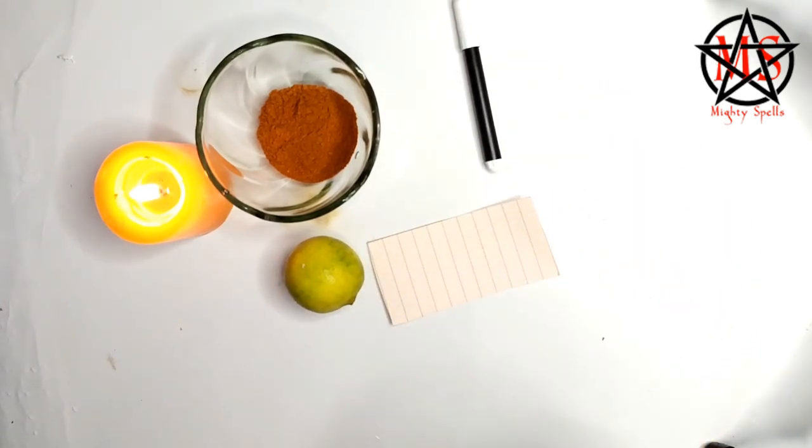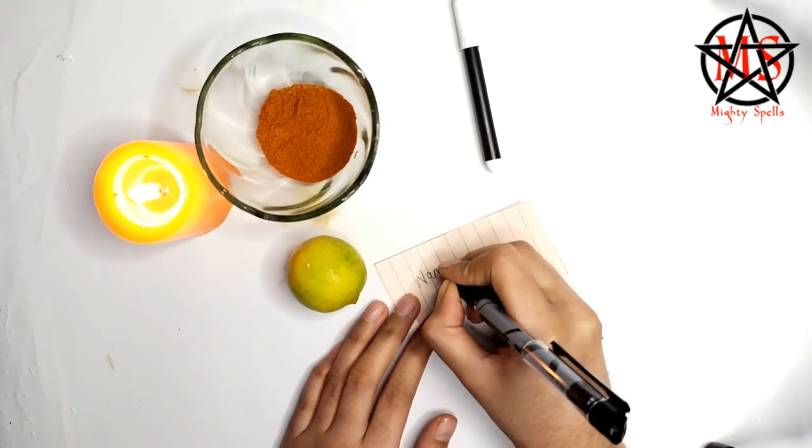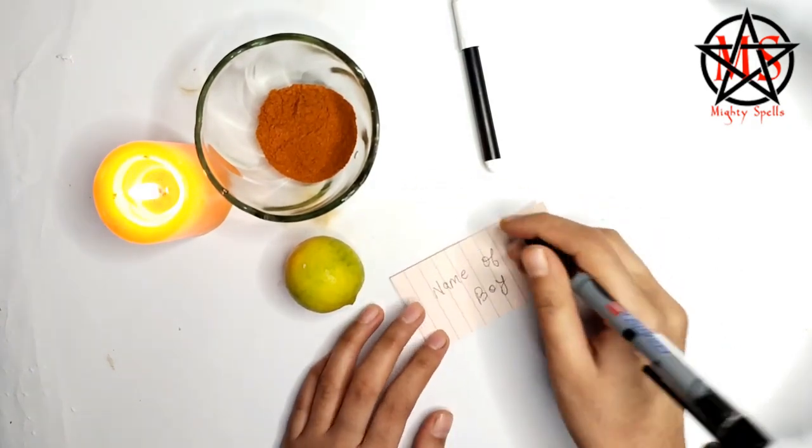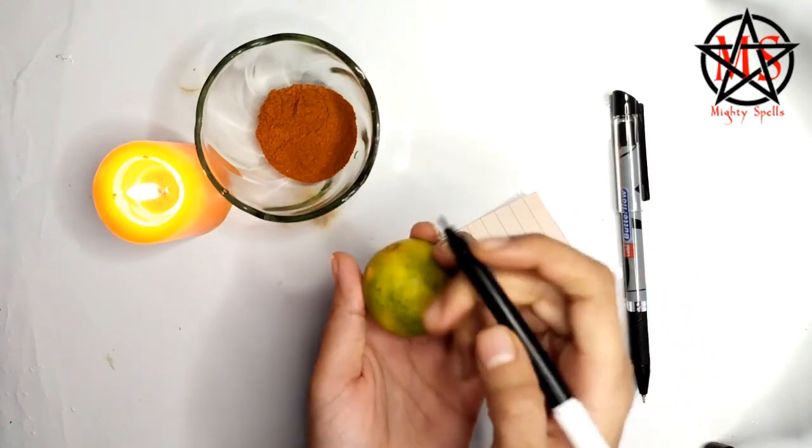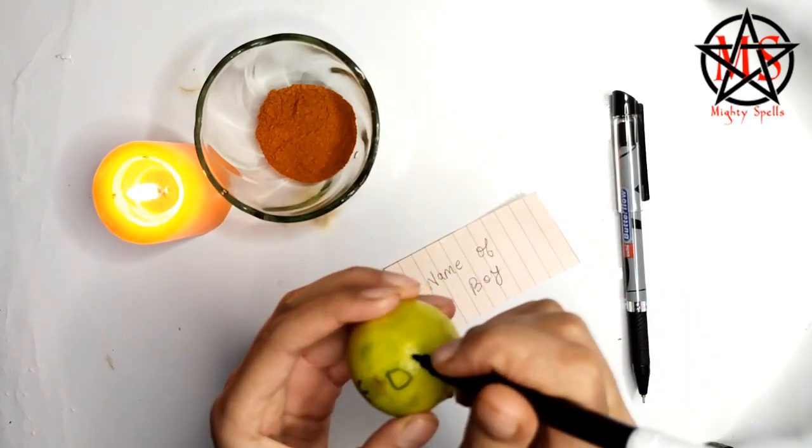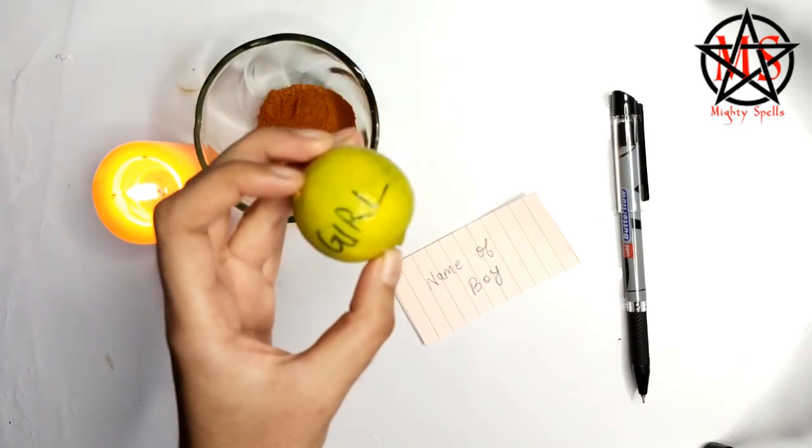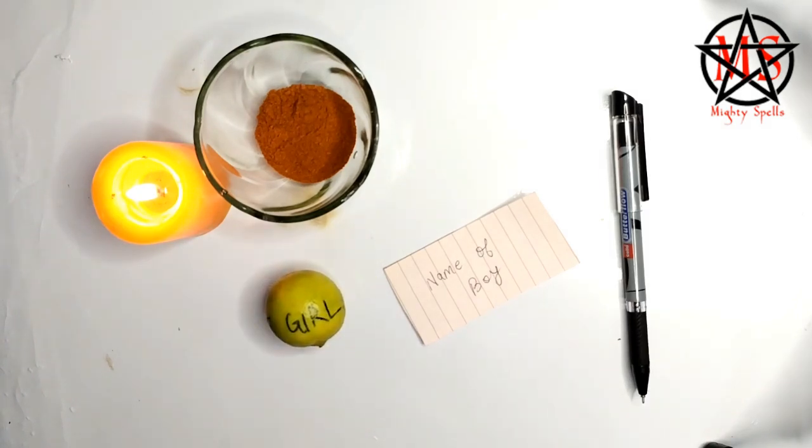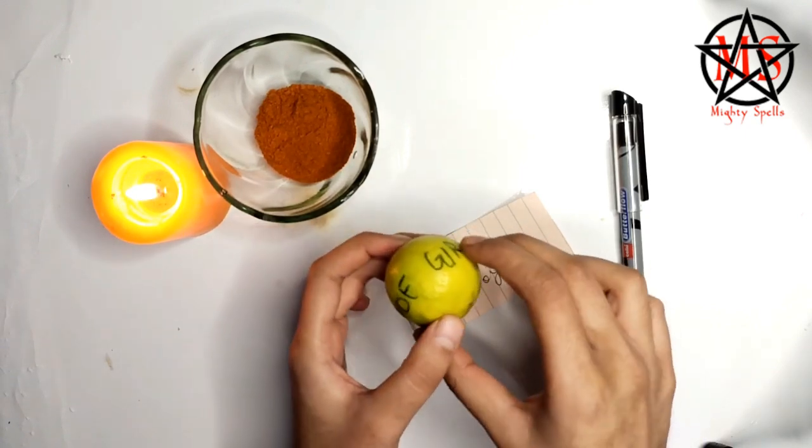And on the paper write their name like this. And on the lemon I want you to write the name of the girl. And now what you have to do, you have to place the lemon on the top of the name.